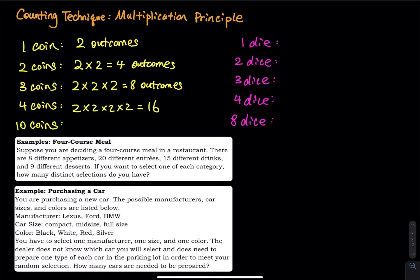What if you have 10 coins? That will be two times itself 10 times, so that will be two raised to the 10th power. Two raised to the 10th power is equal to 1024.